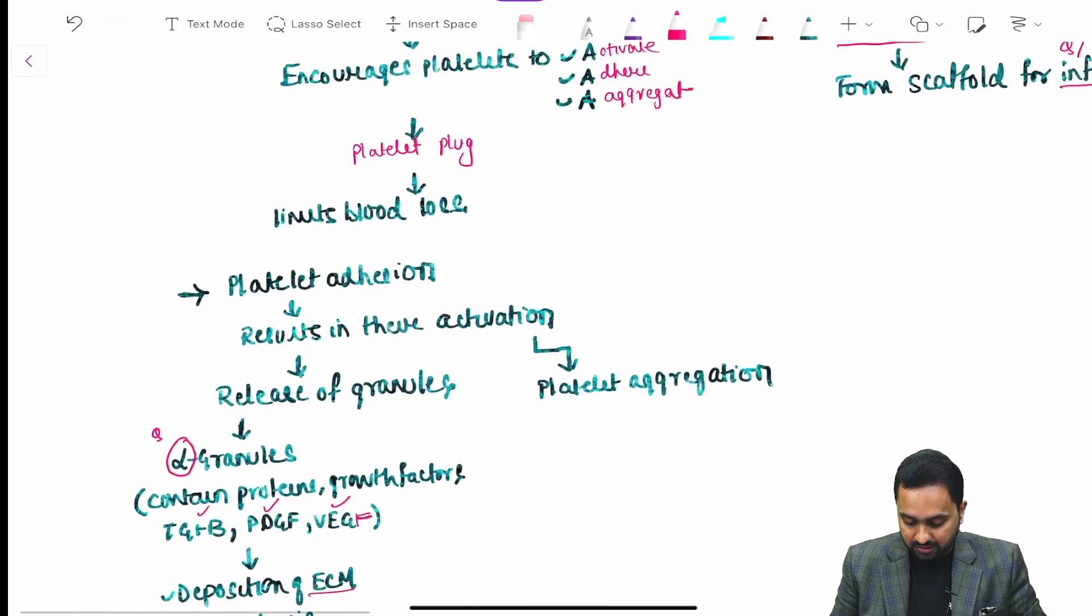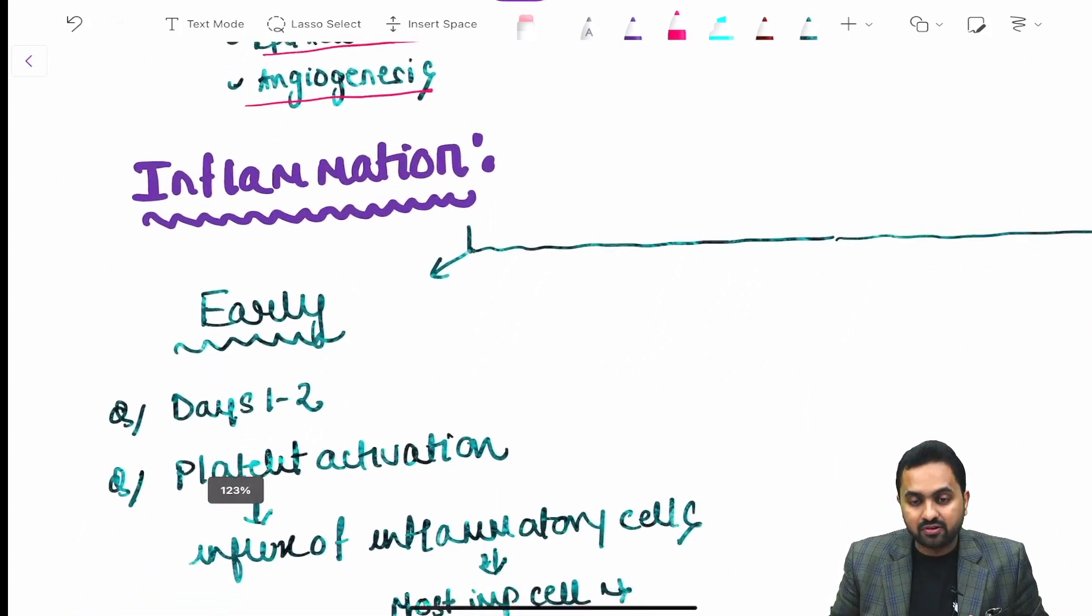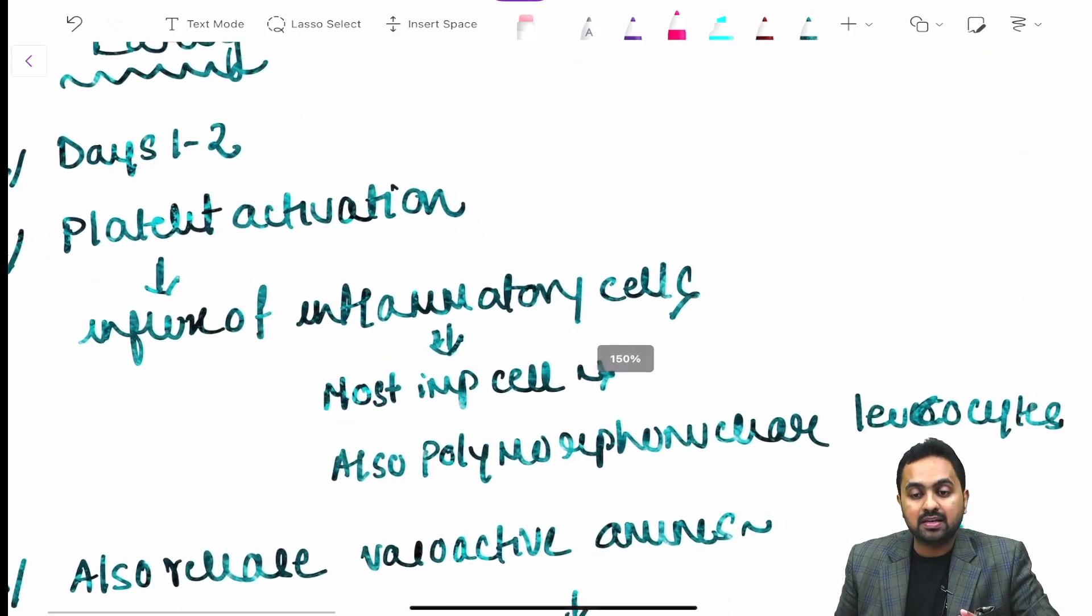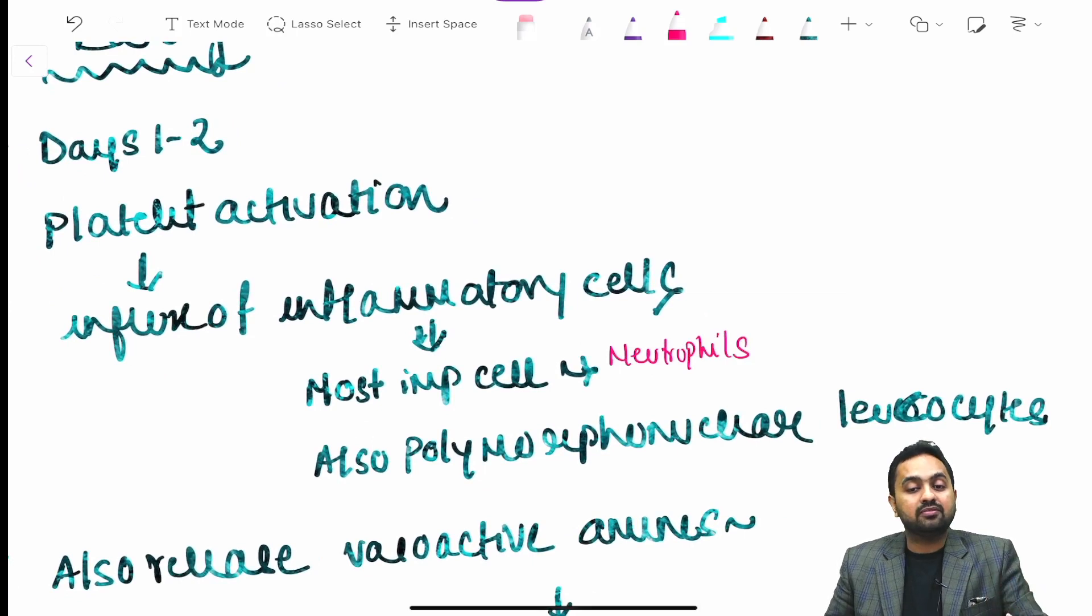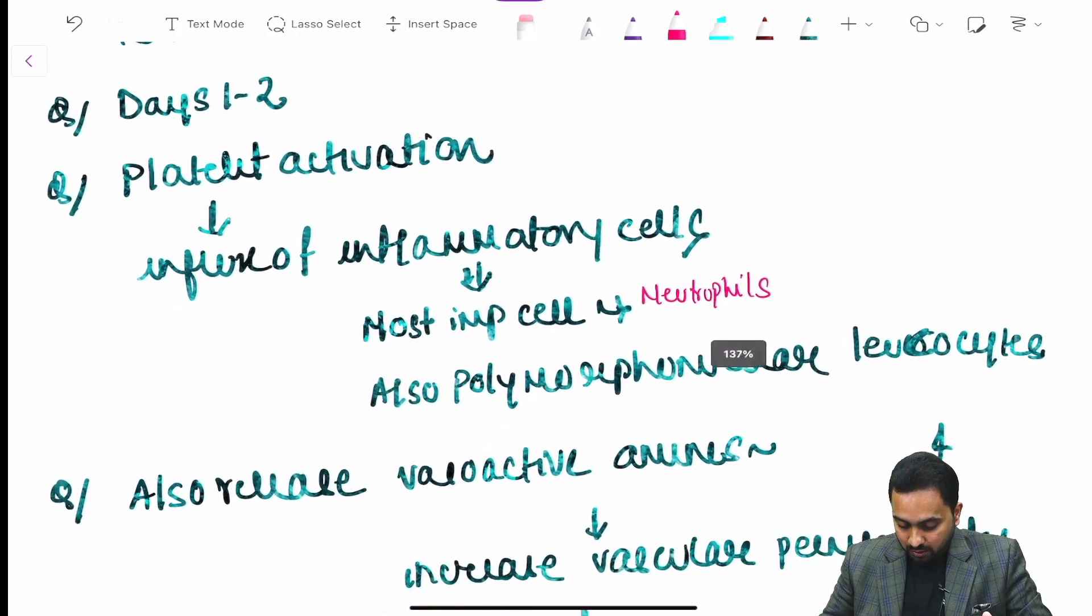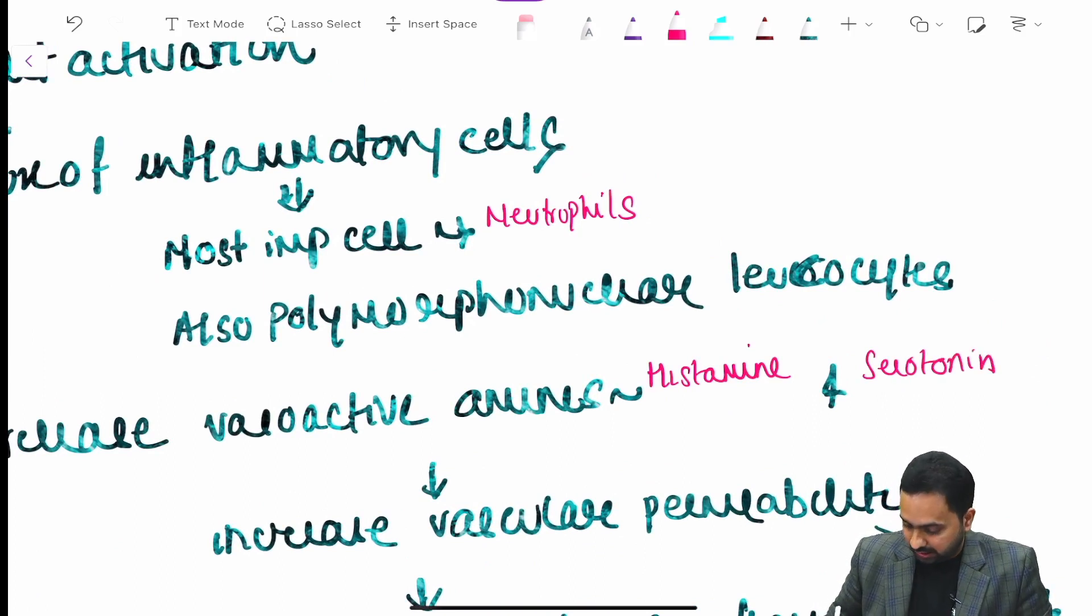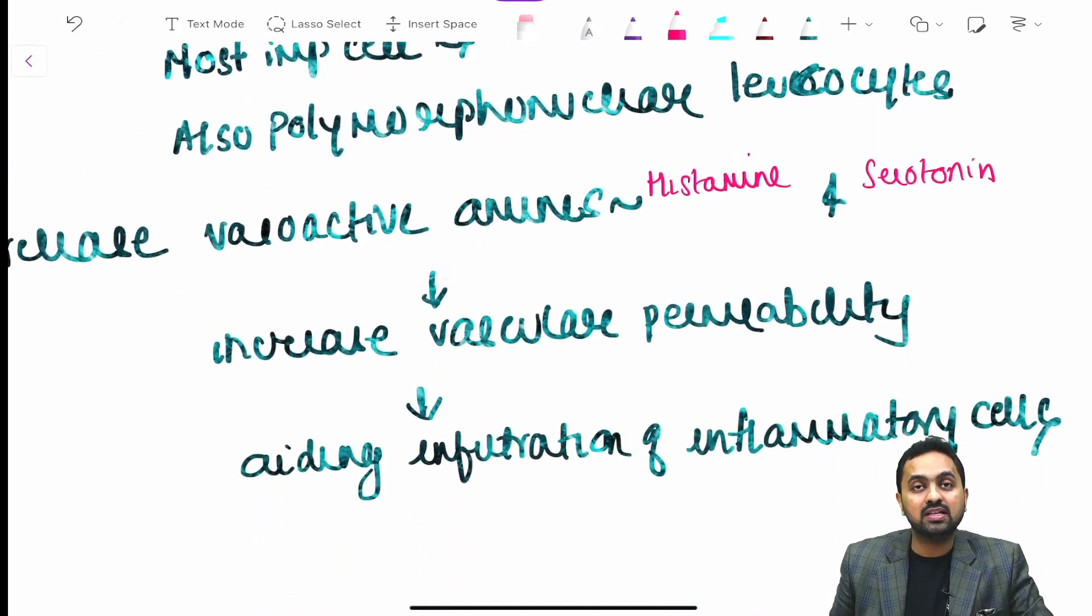Following the hemostasis phase occurs your inflammatory phase. The inflammatory phase can be divided into two parts, your early inflammatory and your late inflammatory. Early inflammatory starts from day one or day two and the platelet activation causes the influx of your inflammatory cells mainly the neutrophils. It also causes the influx of your polymorphonucleosides. They also release vasoactive amines like your histamine and your serotonin which causes increased vascular permeability aiding in infiltration of the inflammatory cells.